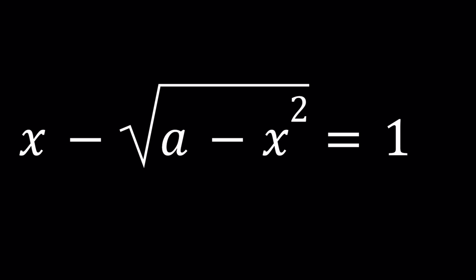We have x minus the square root of (a minus x²) equals 1, and we're going to be solving for x. a is a given number, so for all values of a, we're going to be solving this equation for x.